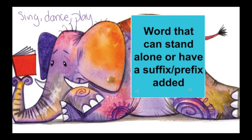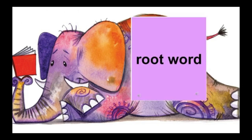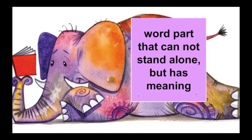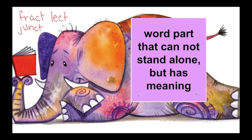Those words have prefixes and suffixes added to them to add meaning. Our last word part to discuss is a root word. A root word is a word part that cannot stand alone but has meaning. Examples of root words include fract, which you can use to make words like fracture or fraction; junct, to make words like juncture; or lect, which can be used in words like elect or election.